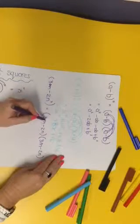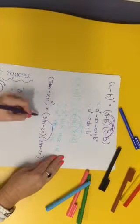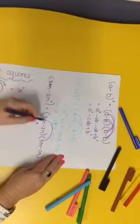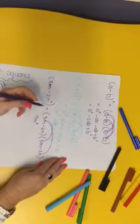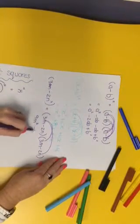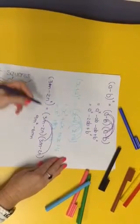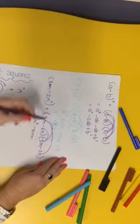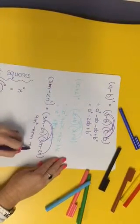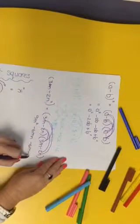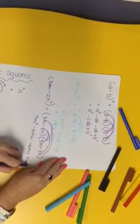And we go 3m times 3m gives you 9m squared, 3m times negative 2n gives you negative 6mn, negative 2n times 3m gives you negative 6mn, negative 2 times negative 2 gives you positive 4n squared.